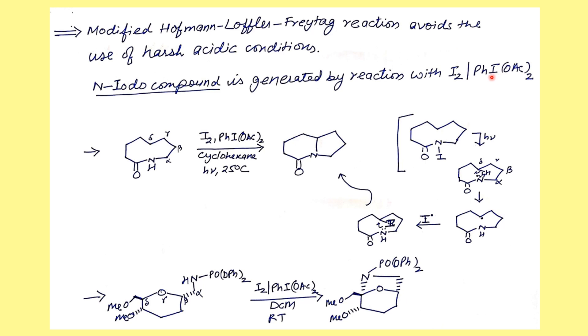This particular reaction takes advantage of harsh acidic conditions, so people have started using iodine and iodobenzene diacetate which is much milder. Under these conditions, iodination takes place and in the irradiative condition, subsequent cyclization takes place. In the mechanism, first there's iodination, then abstraction of proton, then generation of radical here, then iodination here followed by removal to give the desired product.